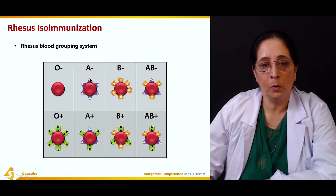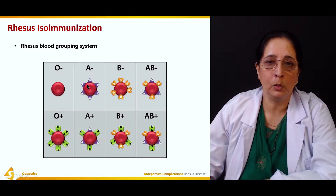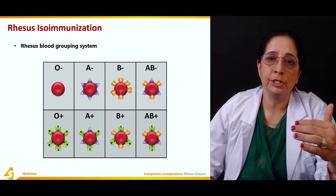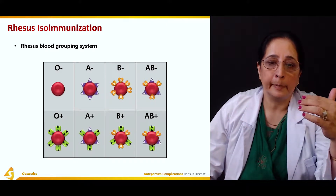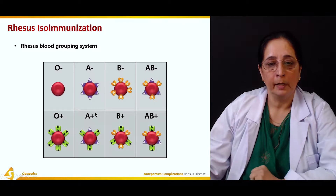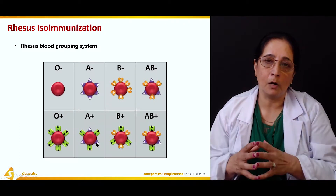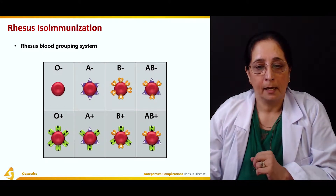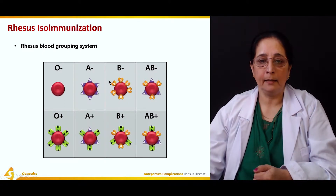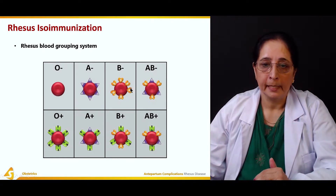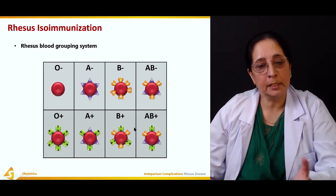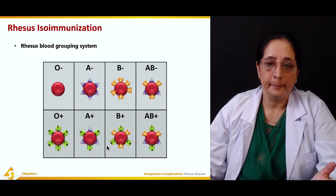A negative blood has no Rh factor present — only A antigens are present, because blood group A has A antigen on the wall of the red blood cell. A positive blood group has A antigens present on the wall along with the Rh factor present on the surface of the red blood cell.